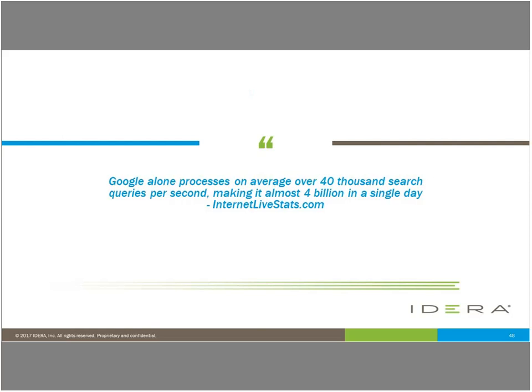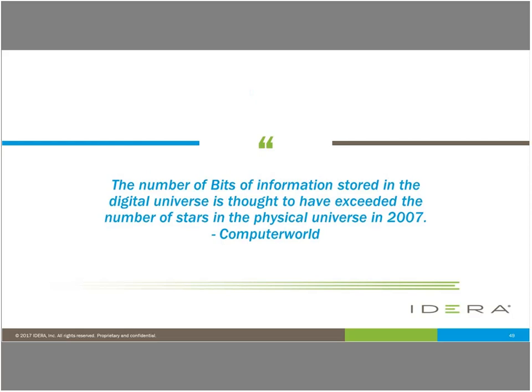Some more fun facts: Google alone can process on average over 40,000 search queries a second, which makes it almost four billion searches in a single day. If you're gathering that information correctly, you can do very interesting things with Google trends. The number of bits of information stored in the digital universe is thought to have exceeded the number of stars in the physical universe as of 2007. This information is just going to continue to keep growing until we start to get a handle on it and put some good processes in place.